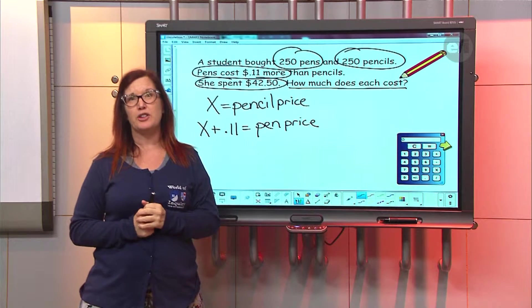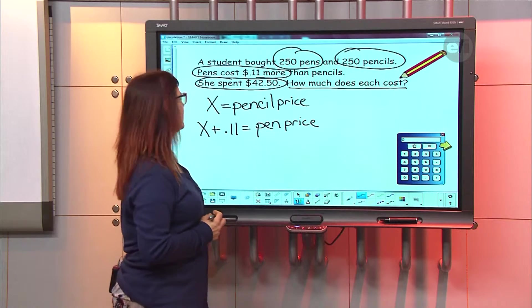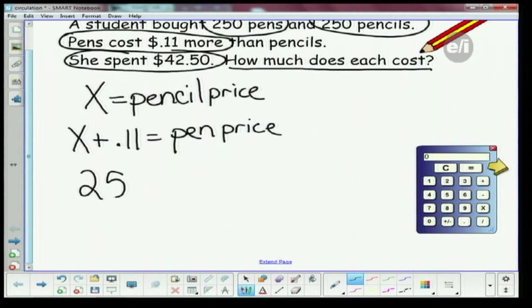Now we're gonna go back and look at the information, other clues that we have in here. We know that she bought 250 pens and 250 pencils, right? So let's just take 250. How would I say 250 pens? I'm not going to use the word pens anymore. I'm going to use a variable, right? 250X.